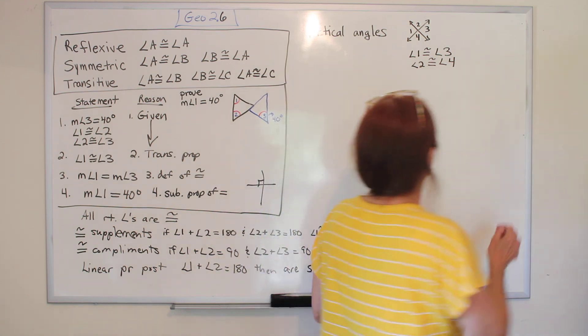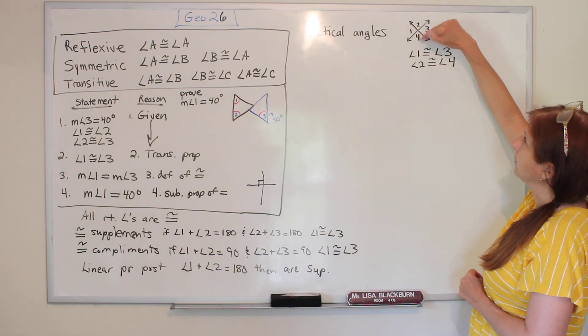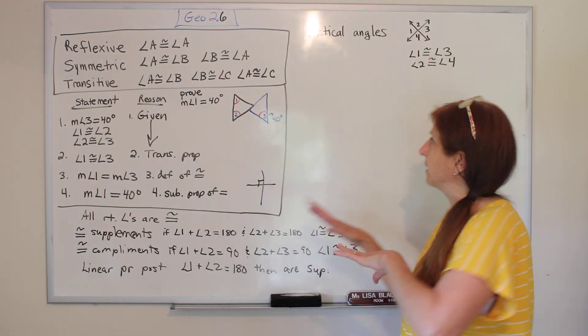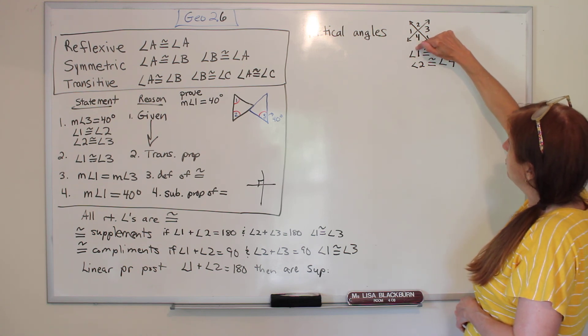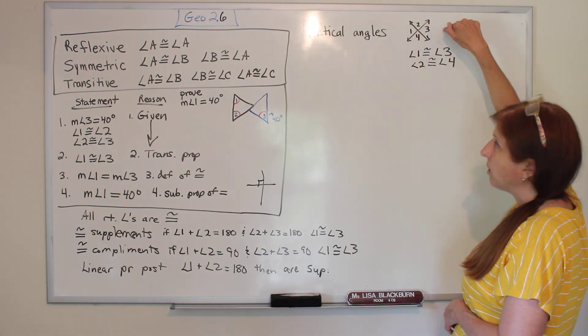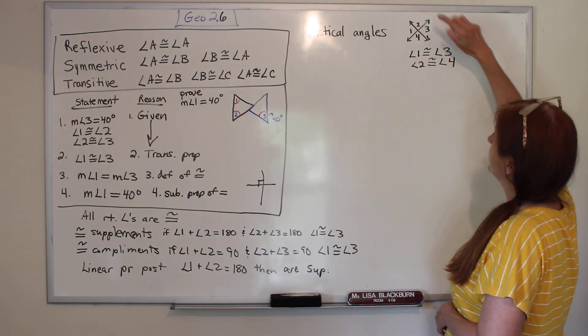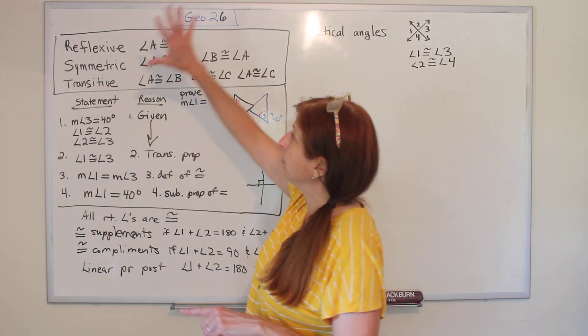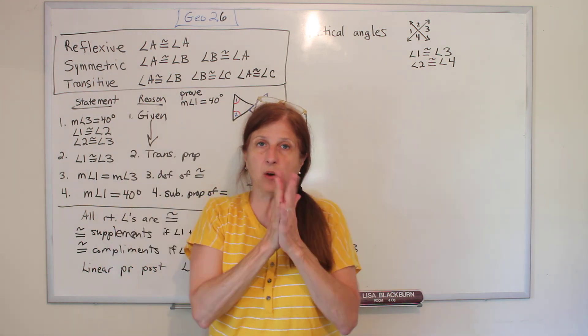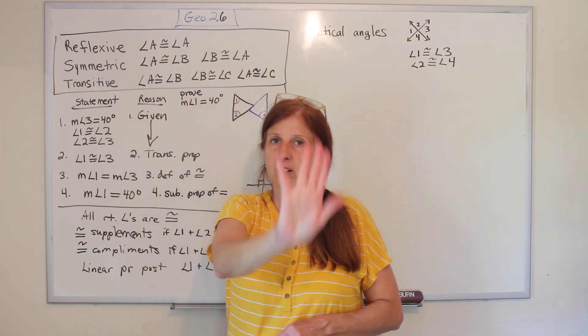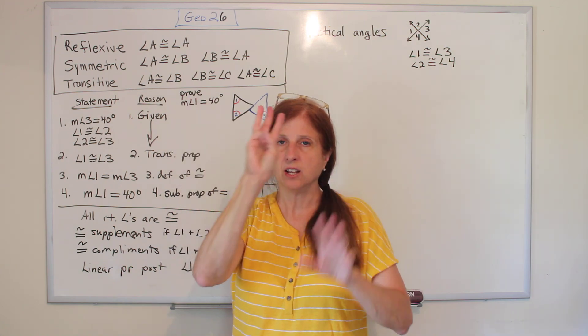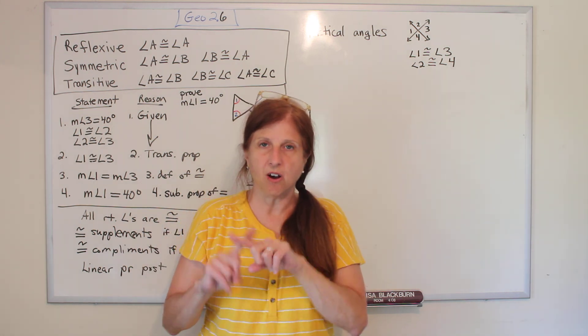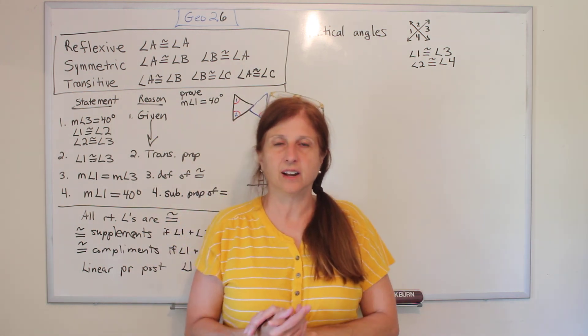So vertical angles. Now, I don't know why it's called vertical angles. It makes sense with four and two that they're equal, but one and three are also equal, and they're horizontal. So don't let that confuse you. Angle one is congruent to angle three because they're across from each other, and angle two is congruent to angle four because they're across from each other. We will use this the rest of the year. We will use these the rest of the year. These are so important. That's why they've got hand signals. Reflexive, symmetric, transitive, vertical angles. We will use this to prove all kinds of things for the rest of this class.